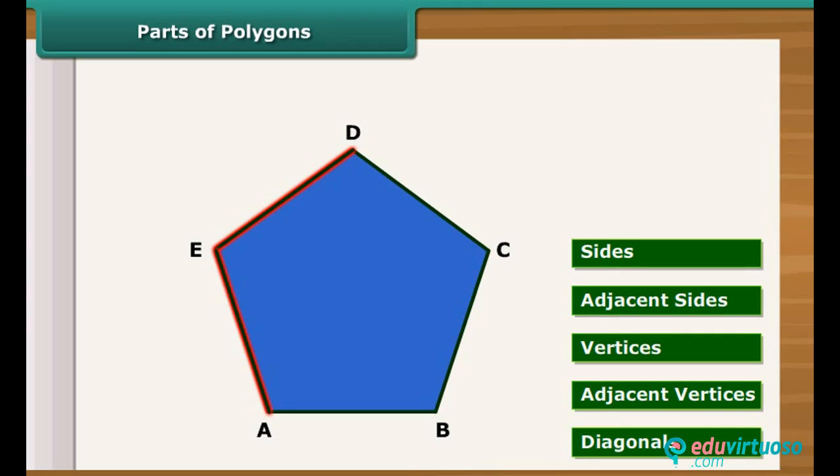The meeting point of a pair of sides is called its vertices. Here A, B, C, D and E are the vertices of given polygon.